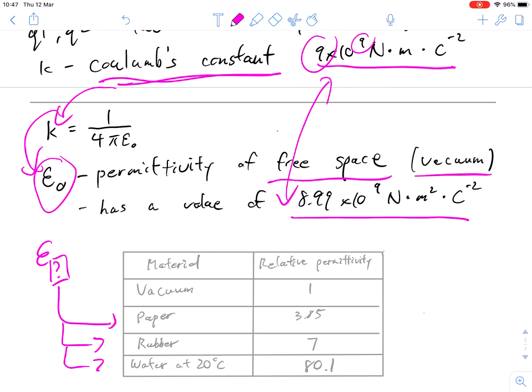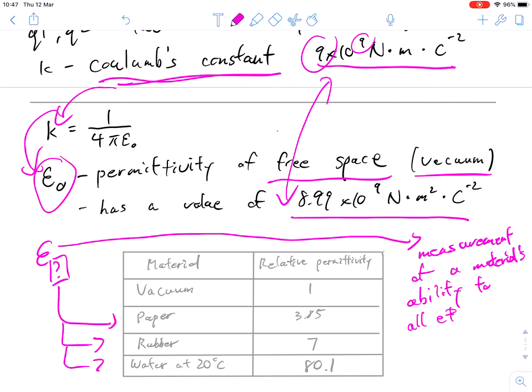And what the permittivity of free space is, is that it can actually represent other substances, such as paper, rubber, or water. And what it's measuring is that particular material's ability. So this epsilon value is a measurement of a material's ability to allow electrostatic forces, or electric forces, to pass, or to permeate.